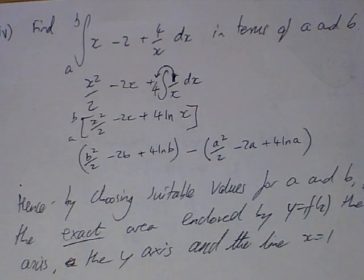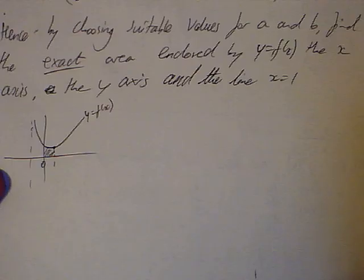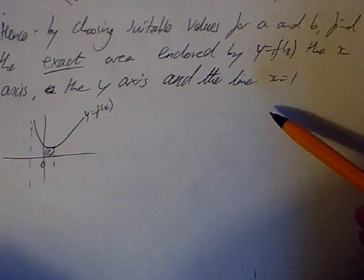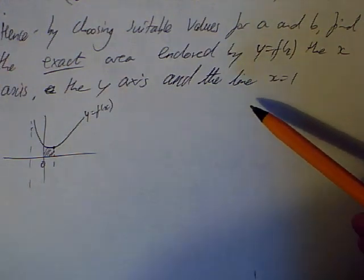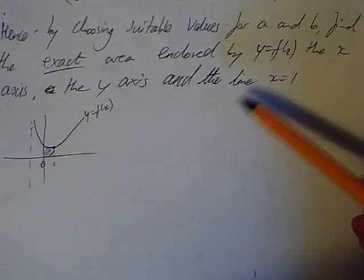And we're supposed to throw b and a into this and write the answer in terms of a and b. So, when we put b in, we're going to have b squared over 2 minus 2b plus 4 ln b. And a big bracket. Take away exactly the same thing with a. And it's a bit of a nasty looking thing. I'm not really sure. In fact, there's nothing you can do with that. You've just got to leave it like that, I'm afraid.